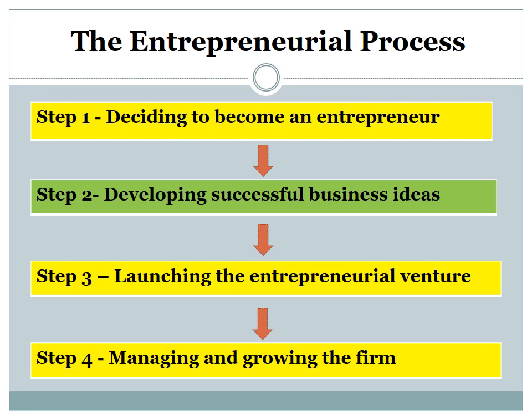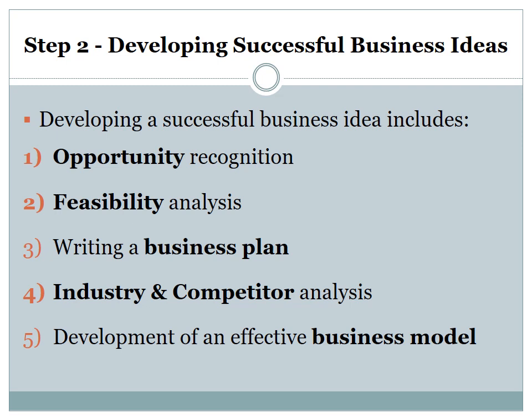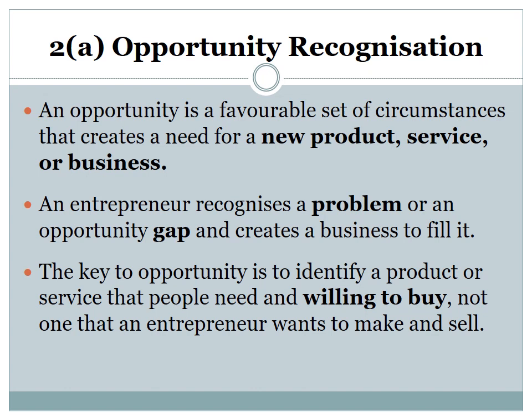Step 2: Developing a successful business idea. Once a person has decided to be an entrepreneur, he has to move to this step. Developing a successful business idea includes five components: 1. Opportunity recognition. 2. Feasibility analysis. 3. Writing a business plan. 4. Industry and competitive analysis. 5. Development of an effective business model.